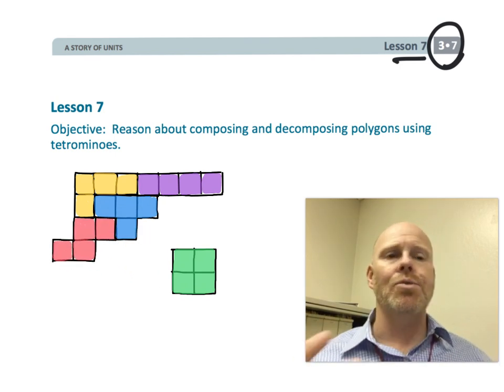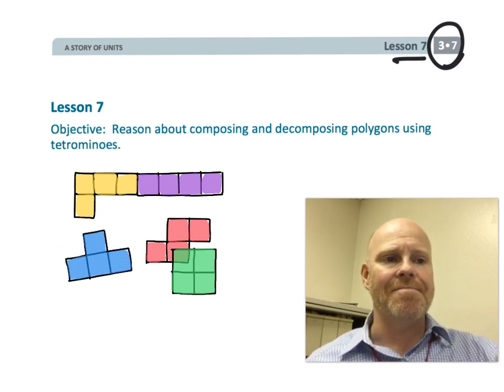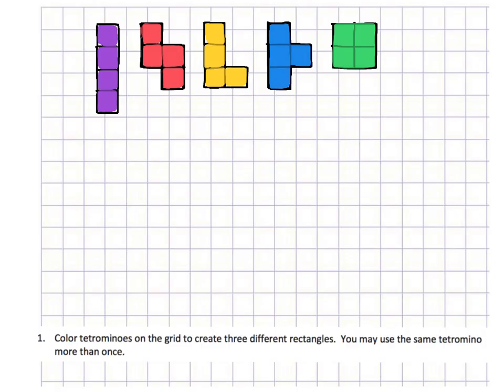So these are the tetrominoes. Students are going to be using these tetrominoes to compose a variety of different shapes. The directions say color the tetrominoes and we're going to use these tetrominoes and we're going to try and build three different rectangles. You are allowed to use the same tetromino more than once.